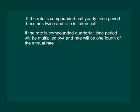Similarly, if the rate is compounded quarterly, since there are 4 quarters in a year, the time period is multiplied by 4 and the rate is taken as one-fourth of the annual rate. So compounded half yearly means interest is calculated 2 times in a year, while compounded quarterly means interest is calculated 4 times in a year.